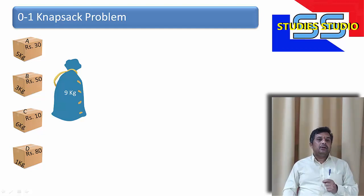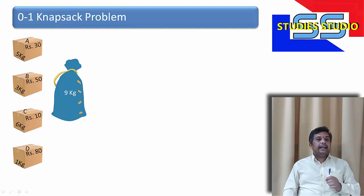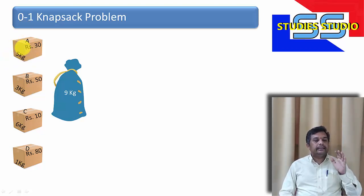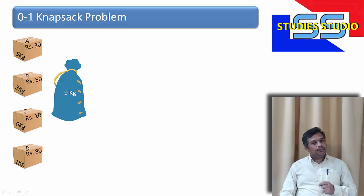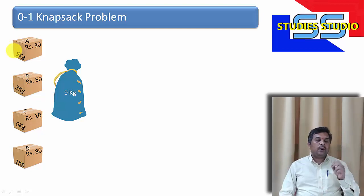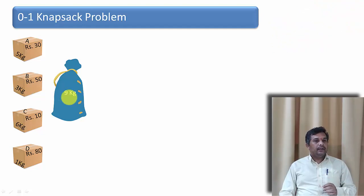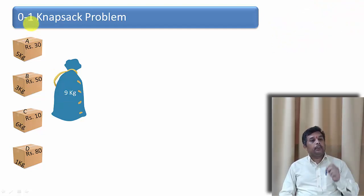The knapsack problem is a problem where there is a knapsack and there are a few objects, and each object has a price and a weight associated with it. We want to keep these objects into the bag so that we can earn the highest profit. There is also a capacity of the knapsack. The meaning of zero-one knapsack is: if we want to take an object, we need to take it fully; otherwise we need not select it at all. It means we cannot take a fraction of the object.